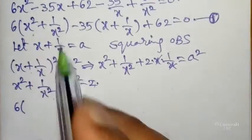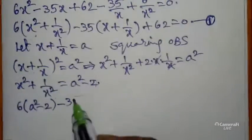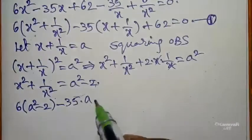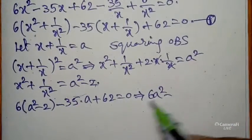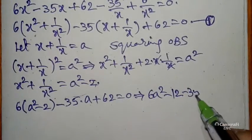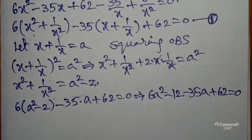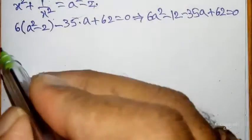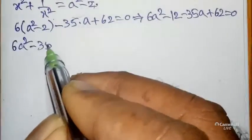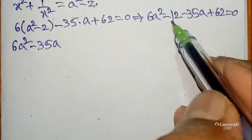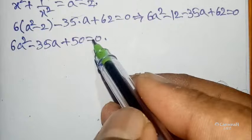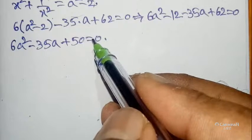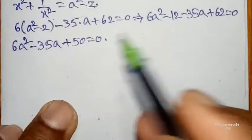Expanding: 6a² minus 12 minus 35a plus 62 equals 0. Simplifying: 6a² minus 35a plus 50 equals 0. This is a quadratic equation in terms of a, so we can use factoring.